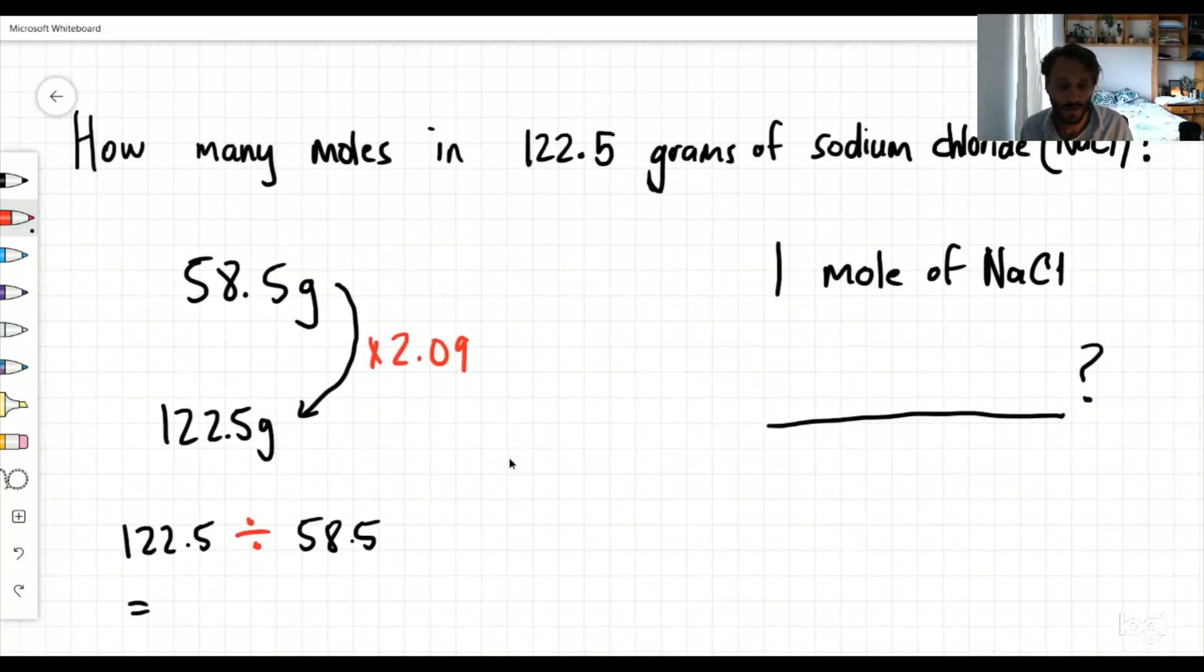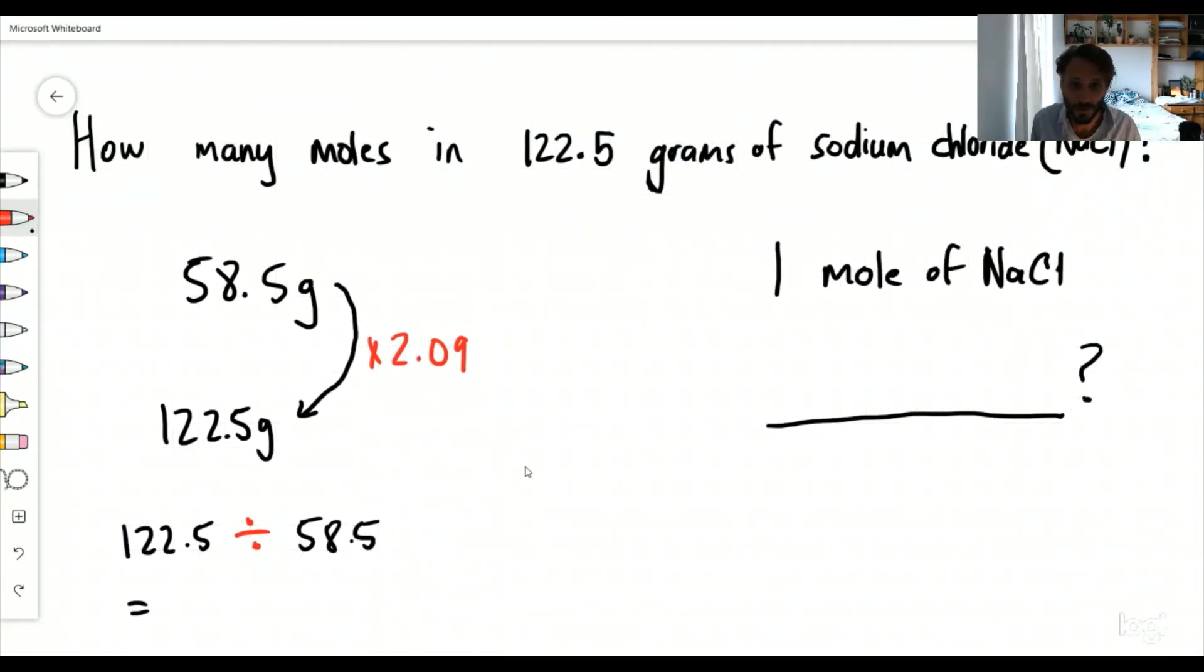Remember with equations, if I do this to one side, I can actually go ahead and do it to the other side. So effectively, what I can do here is I can say one times by the same number 2.09. So 122.5, how much is that going to be in moles? It's going to be 2.09 moles of NaCl. Awesome.